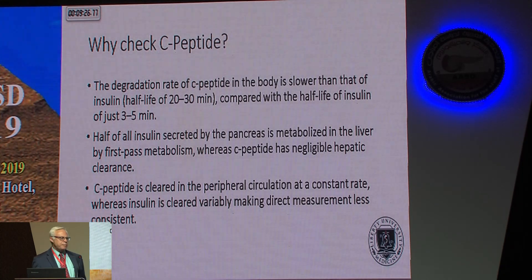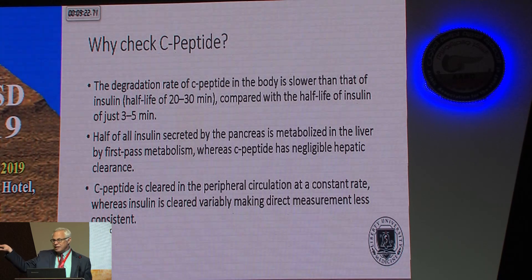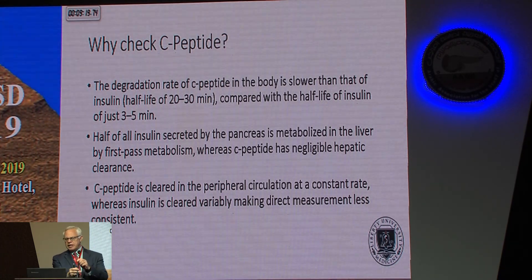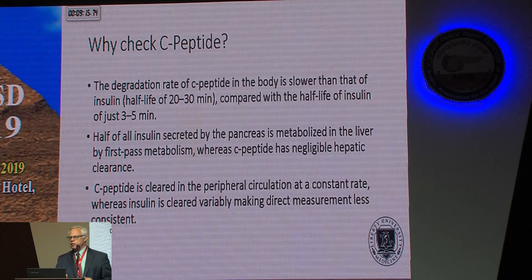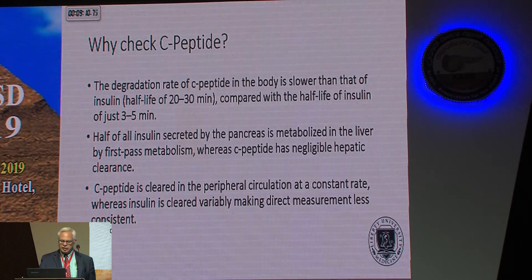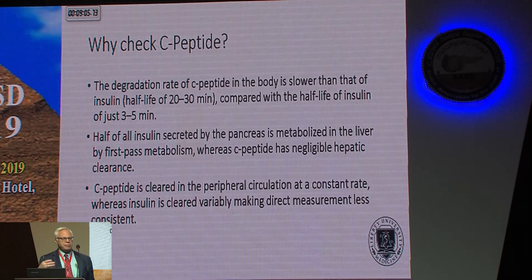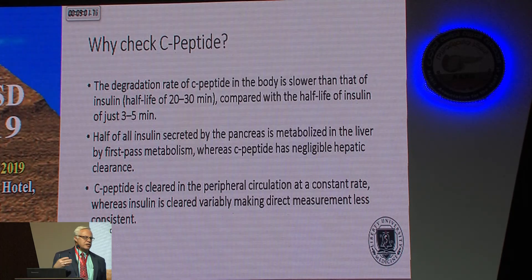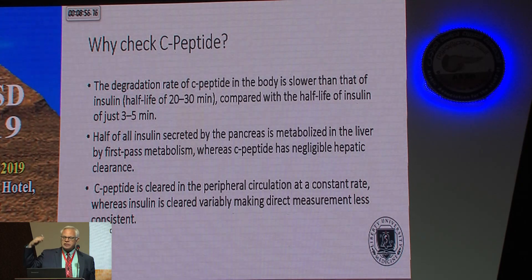So why check C-peptide levels instead of insulin levels? Why not just check insulin directly? C-peptide is actually degraded in the body much slower than insulin. Insulin is out of the body within three to five minutes, while C-peptide stays around for about 20 to 30 minutes. Also, half of the insulin secreted by the pancreas is metabolized by the liver — not so with C-peptide. So if someone has liver disease or altered liver metabolism, your C-peptide is more stable.